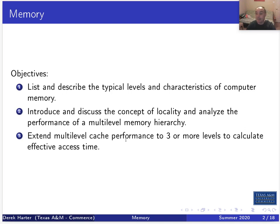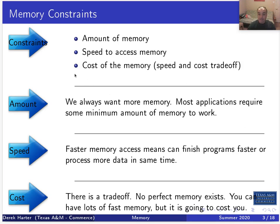Memory is kind of defined by the constraints on it, and you need to understand these. We have constraints on the amount of memory we can have, the speed of memory we might be able to get for a computing system, and its cost. In terms of amount — more is always better from the point of view of writing a program. Lots of applications require some minimum amount of memory to work at all, and for many applications the more memory you have the better. Especially in the modern era where we want to do big data, machine learning, or data analytics — we want lots of memory.